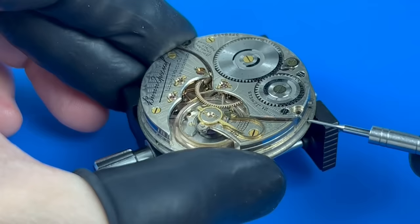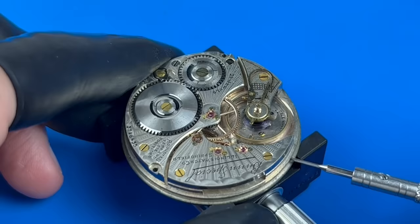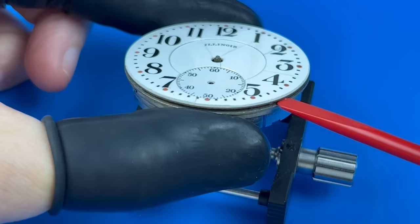There are three dial foot screws along the rim of the movement plate. Each screw presses against one of the three feet soldered to the underside of the dial. This is what prevents the dial from falling off the front of the movement.